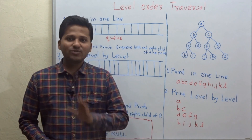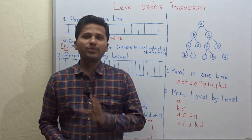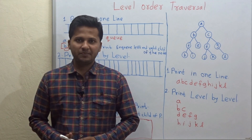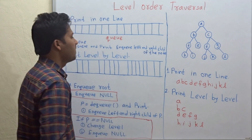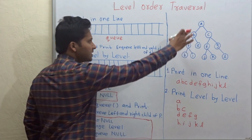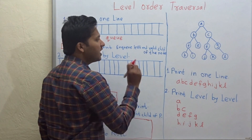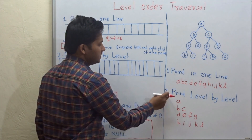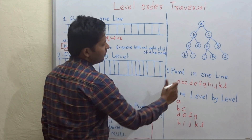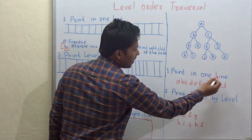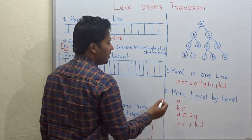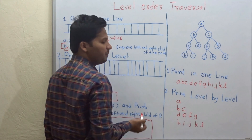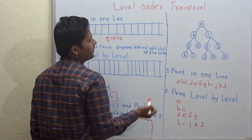Hello friends, today we are going to see how to print level order traversal of a binary tree. So let's see the example. This is the binary tree and we can print the level order traversal in two ways. The first way is printing in one line and the other way is print level by level.